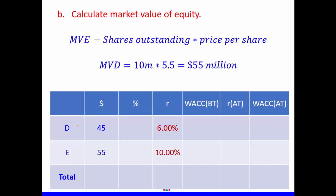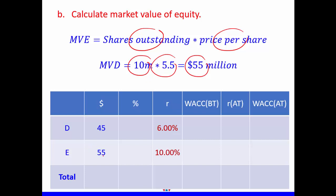The next part is to calculate market value of equity. The formula for market value of equity, or market capitalization, is shares outstanding times share price. In the question, we have 10 million shares and a share price of $5.50, so this gives us a market value of equity of $55 million.